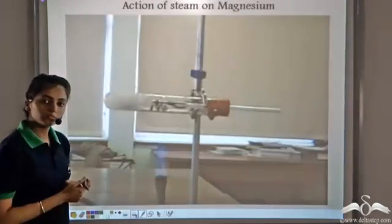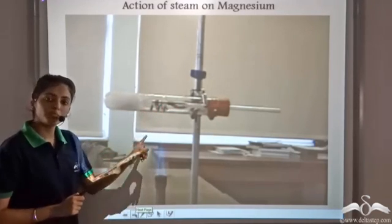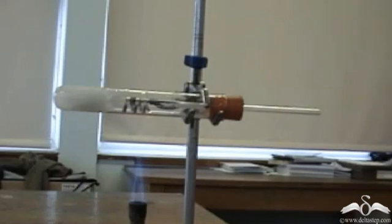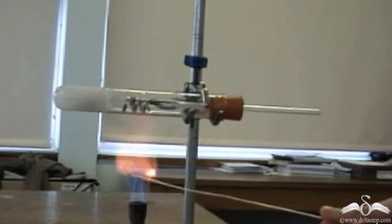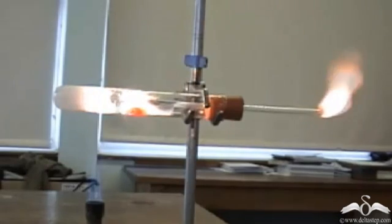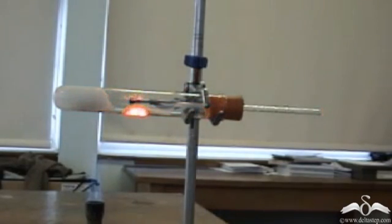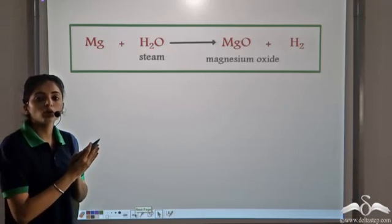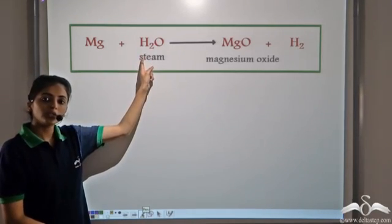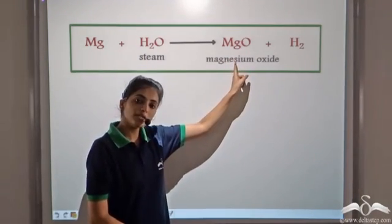One of these metals is Magnesium. Magnesium reacts only with steam and not with cold water. We take a Magnesium ribbon and heat water to form steam. Magnesium reacts with steam and it forms a dazzling white flame. When metals react with steam, they form the corresponding oxide and still release Hydrogen gas. So Magnesium reacts with steam to form Magnesium Oxide (MgO) and Hydrogen gas is released.